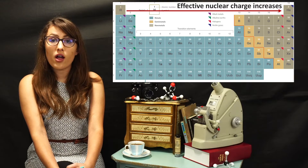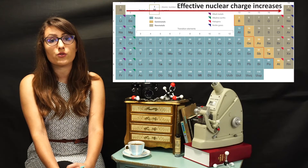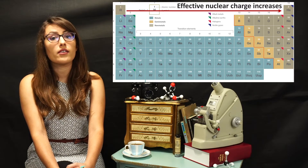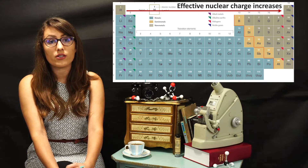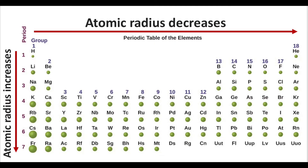As you move across the period, the size of the shell remains roughly the same, but the effective nuclear charge increases, thus bringing the valence electrons closer to the nucleus. This then has an effect on the atomic radius, which is the distance between the nucleus of an atom and its valence shell. The atomic radius decreases as you move across the periodic table, because of effective nuclear charge.